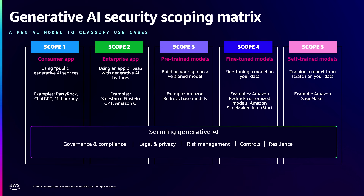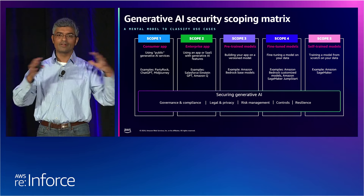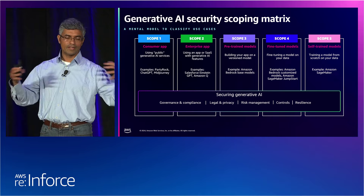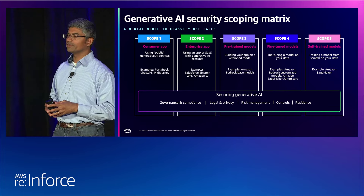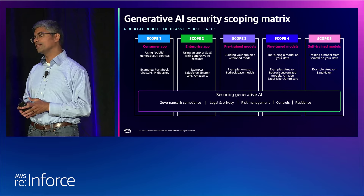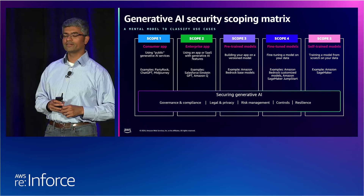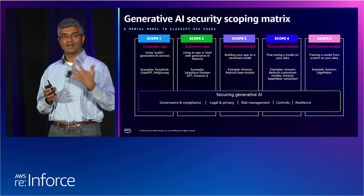Scope five on the far right is where you do all the training yourself — starting from scratch, training your own foundation model using data you choose, and effectively becoming a model provider who controls all aspects of the application. On AWS you might use something like SageMaker to do the training jobs. From a data privacy perspective, you control all the data that went into the training process. Underlying all scopes are security considerations: governance, legal and privacy, risk management, and the controls you apply — and they will change based on which scope you're operating in.